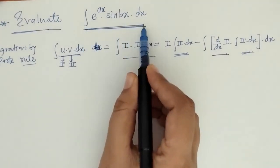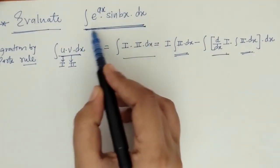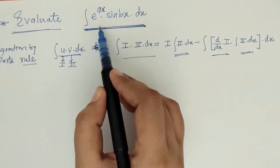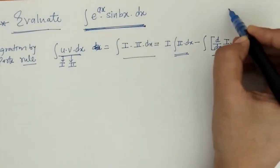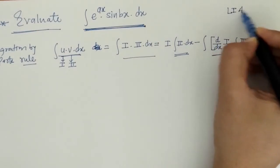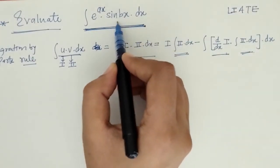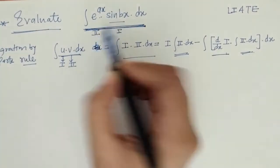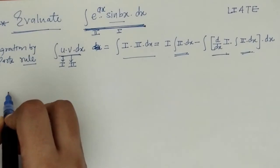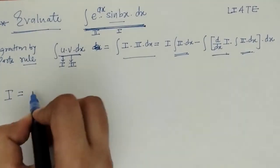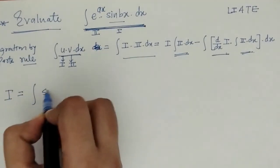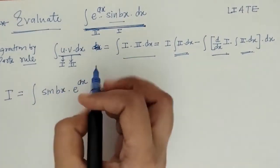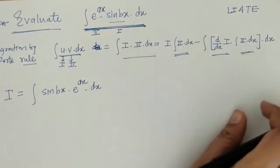We have to apply this rule of integration by parts. First we arrange the two functions using the LIATE rule. Sine bx is the first function and the exponential e raised to ax is the second function.